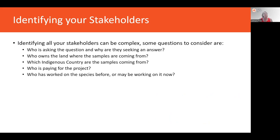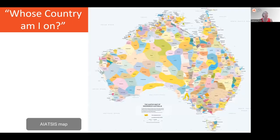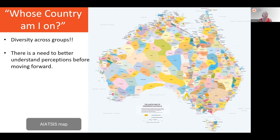Identifying stakeholders can be a complex process that takes considerable time. Key questions include: who's asking the question and why? Who owns the land where samples are coming from — noting that a large proportion of land in Australia is held in private hands? Which Indigenous country are the samples coming from? Who's paying for the project? And who has worked on the species before or is working on it now?